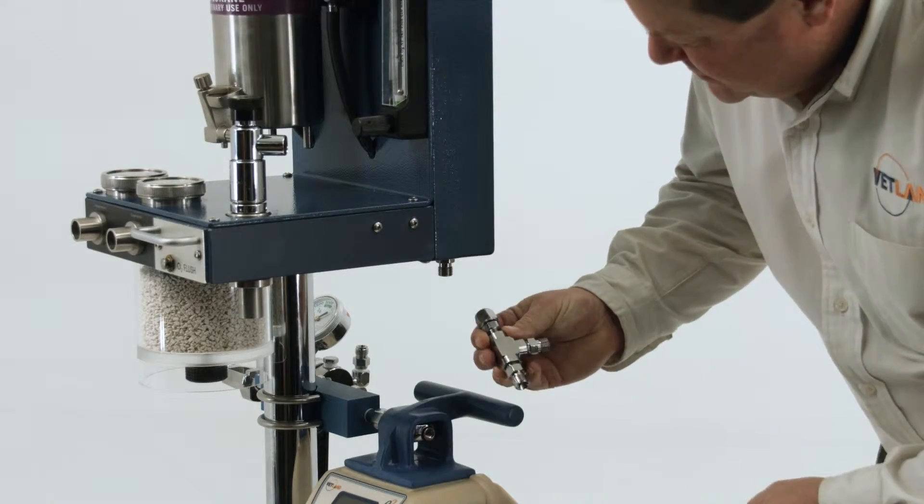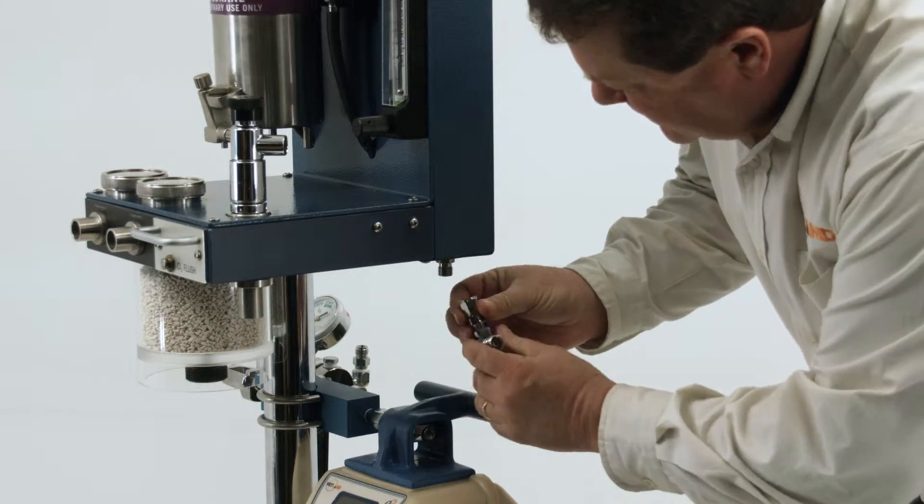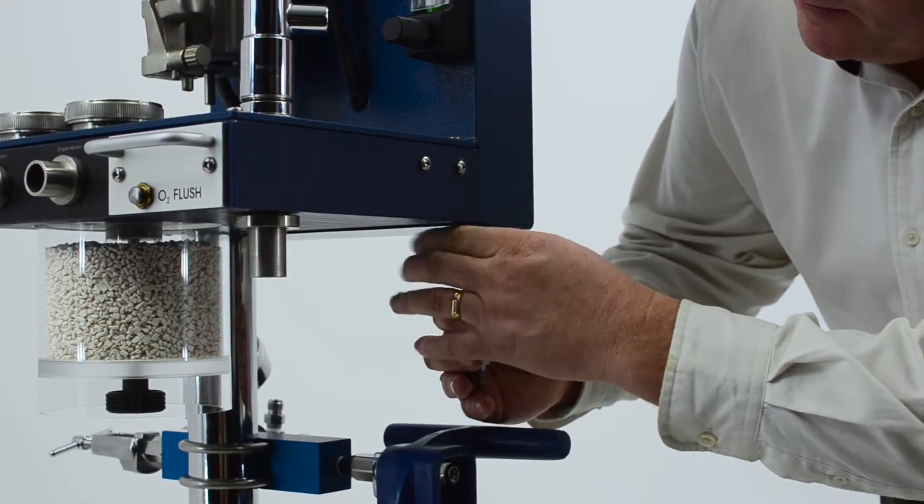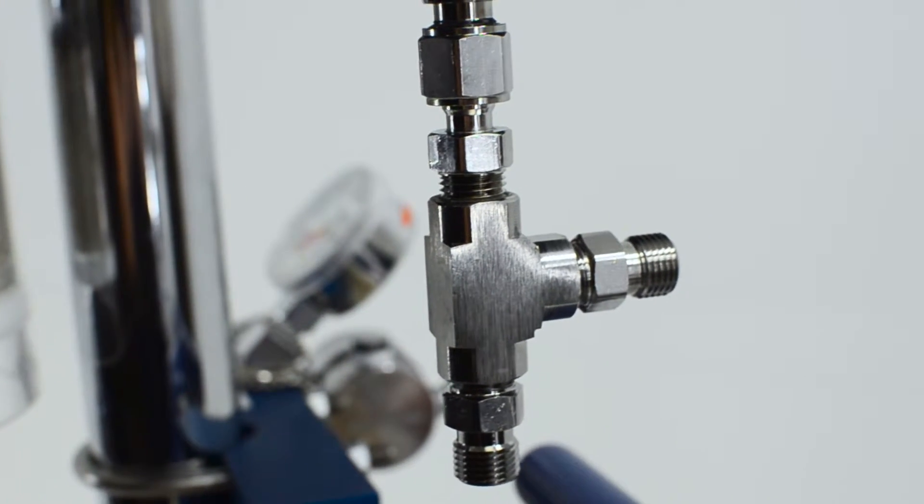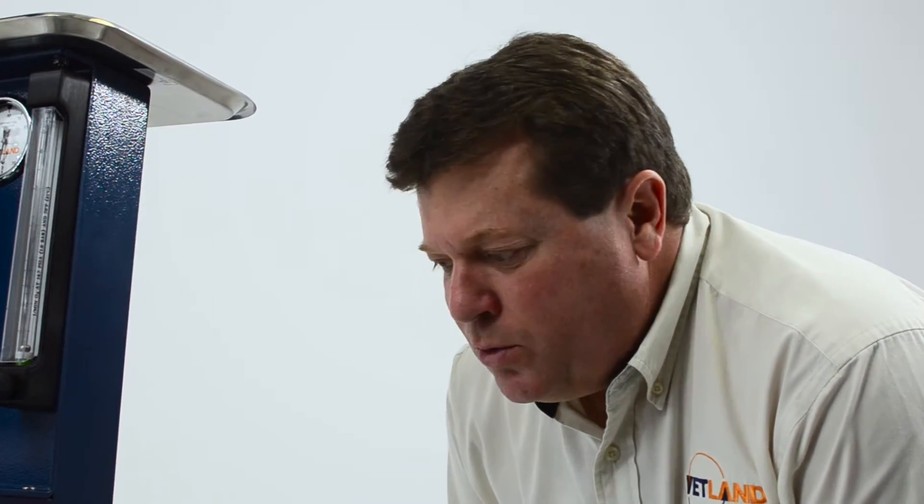Next we're going to attach the oxygen inlet T like so and this needs to be wrenched tight. If it is not wrenched tight and there's a leak here, the oxygen concentrator won't be able to keep up and overcome the leak, so your percentages will be much lower than they should be.